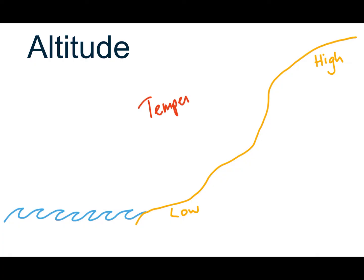We will have a look at temperature a little bit later on in another lesson. But the general rule is that at low altitudes, your temperatures are higher. And as you increase in altitude, the temperature actually ends up falling — it can be as much as one degree Celsius for every 100 meters that you go up in altitude.